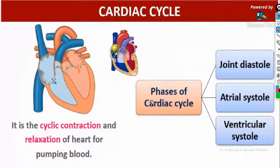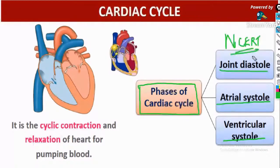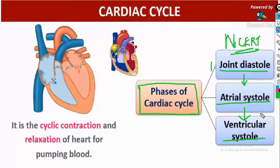Now the phases of the cardiac cycle. There are three phases: first is joint diastole, then atrial systole, and next is ventricular systole. Note this order — it is not directly found in your NCERT. Write it down in your NCERT textbook: joint diastole → atrial systole → ventricular systole.